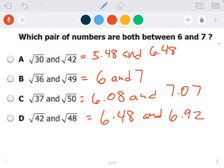So I changed all these to decimals, kind of like I've been doing with the other problems in this Google form. And then which one is both between 6 and 7?